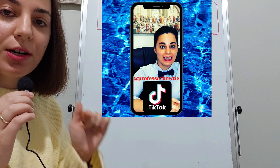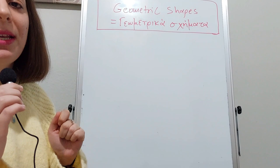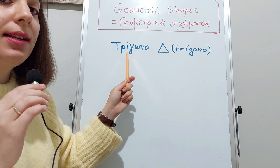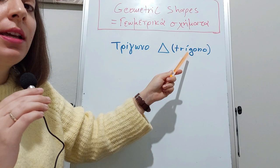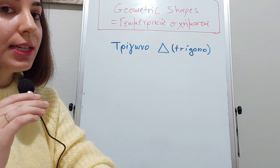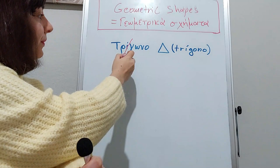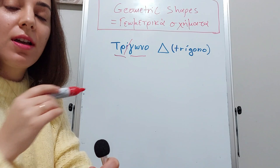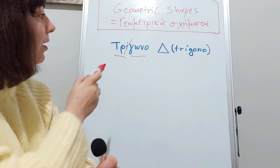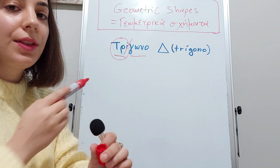Let's begin. The first shape is the triangle, τρίγωνο. It is a compound word that consists of τρι- (three) and -γωνο, which comes from the word γωνία (angle). This shape has three angles.